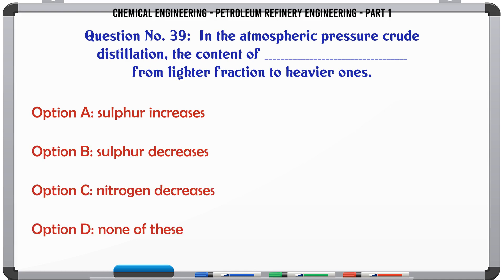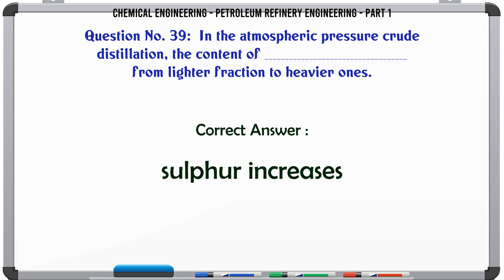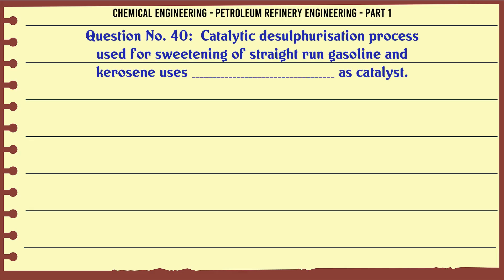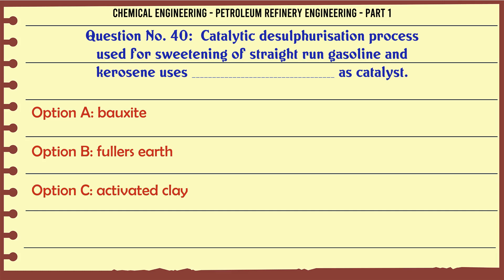In the atmospheric pressure crude distillation, the content of sulfur from lighter fraction to heavier ones: A. Sulfur increases, B. Sulfur decreases, C. Nitrogen decreases, D. None of these. The correct answer is Sulfur increases.